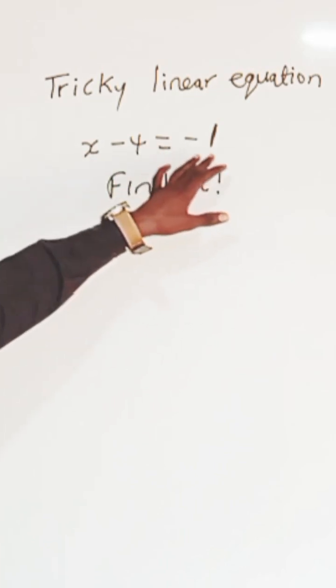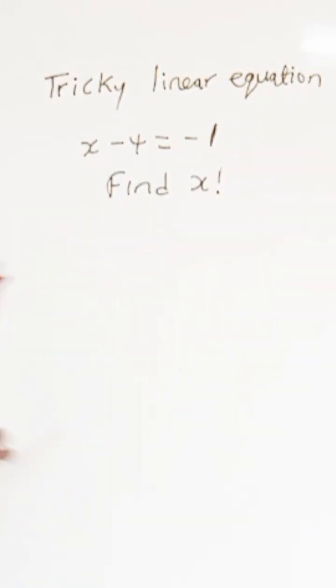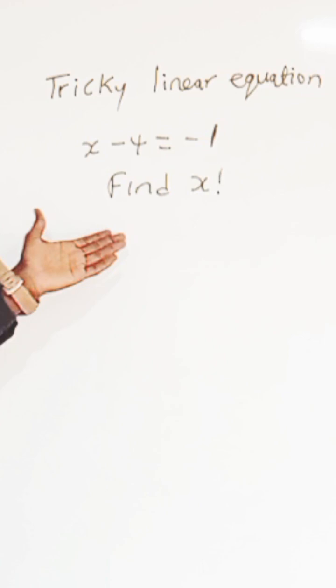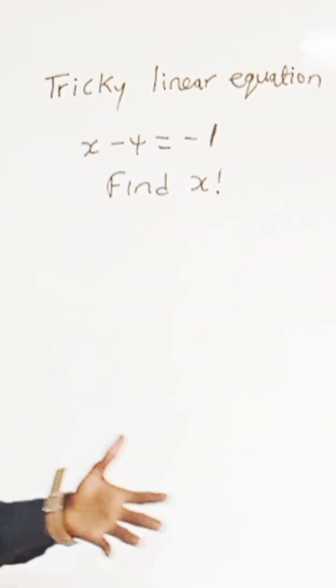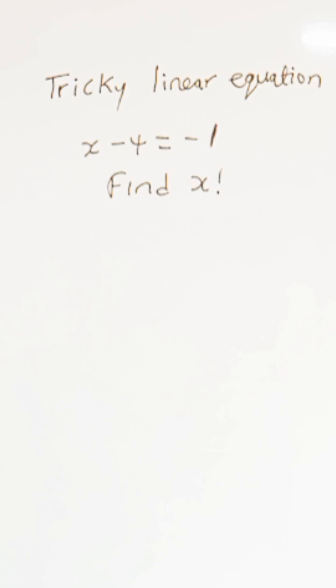You are given x minus 4 equals minus 1. Most find this difficult because we are trying to find x factorial. So how do we solve this type of problem?